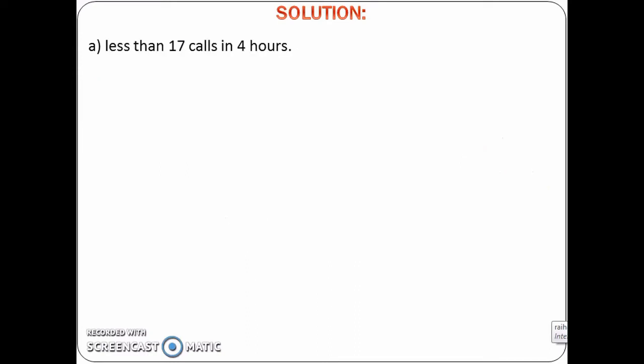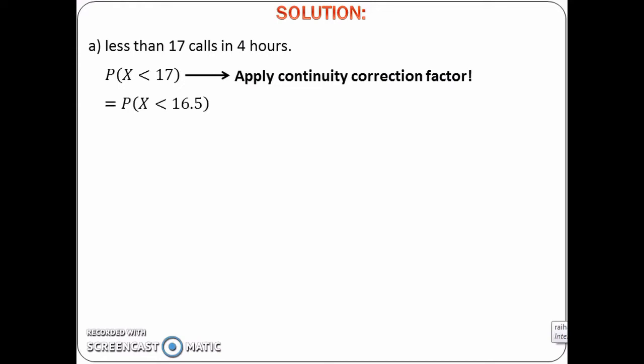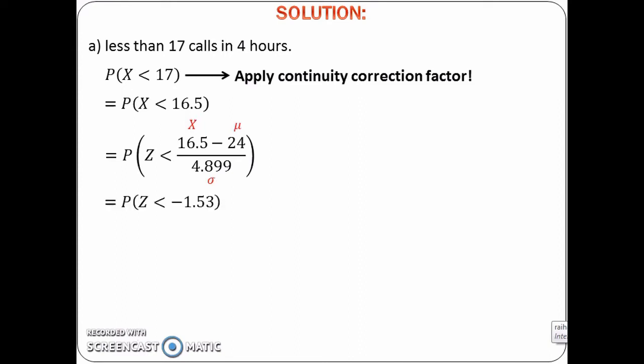The probability of receiving less than 17 calls in 4 hours is probability of x less than 17. Because we have changed the Poisson distribution to normal distribution, we must apply the continuity correction factor. The probability that we want to find now becomes probability of x less than 16.5. To find this, change the normal distribution to standard normal distribution using the formula (x minus mu) over sigma. We get probability of z less than negative 1.53.